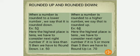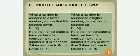Let us see the concept of rounded up and rounded down with examples. When a number is rounded to a lower number, we say it is rounded down. For example, take the number 53. The highest place is tens. We check the next right digit: 3 is less than 5, so we round down to 50. The number 53 lies between 50 and 60, and is nearer to 50.